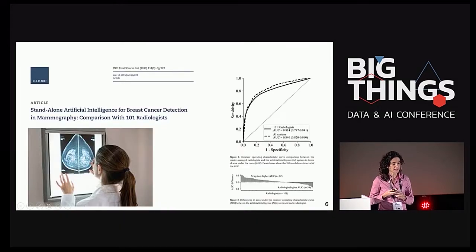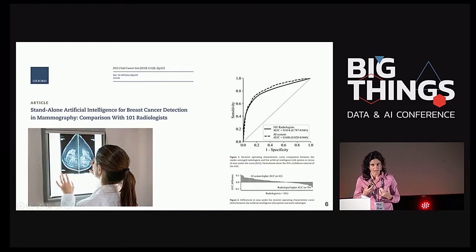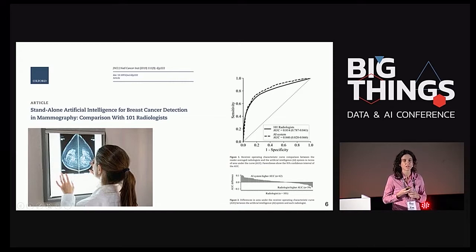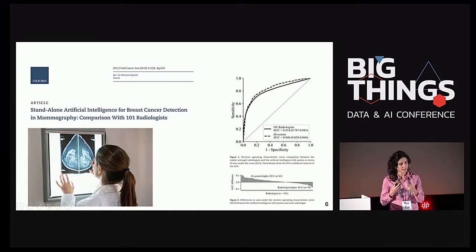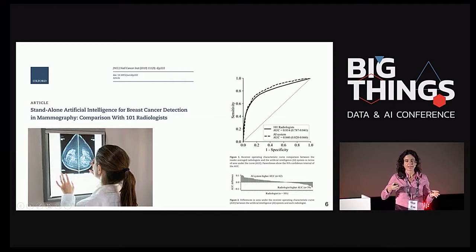Este otro estudio es una validación de ayuda al diagnóstico de cáncer de mama, en el que se compara con respecto a 100 radiólogos. Se hace un estudio de validación de no inferioridad: vamos a ver si el modelo predictivo es al menos tan eficiente como los radiólogos. En la gráfica del área bajo la curva, lo consigue y parece superior en sensibilidad y especificidad. Se comparó desde los radiólogos con más entrenamiento hasta los que tienen menos, y en la mayoría, el modelo superaba la capacidad de predicción.